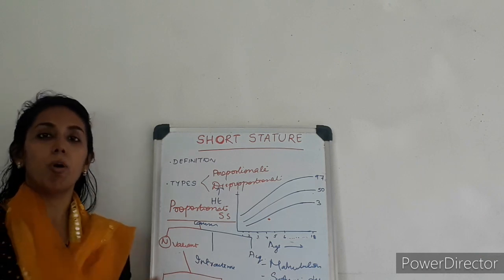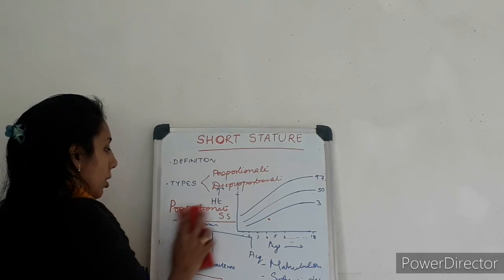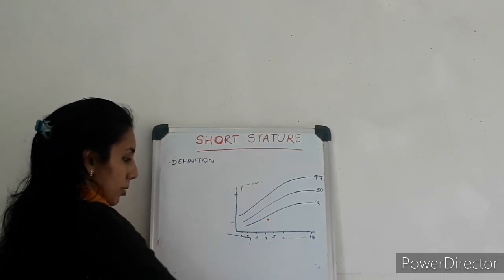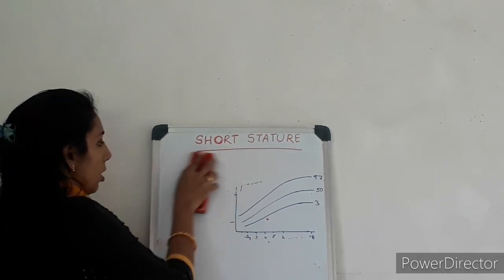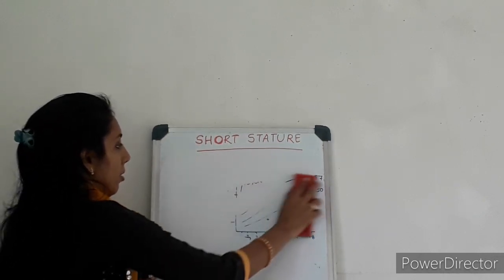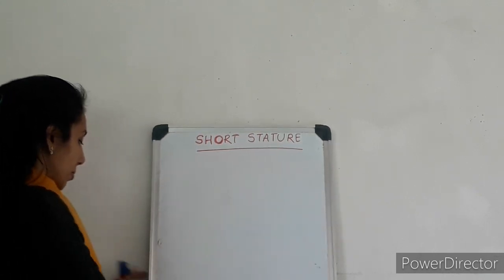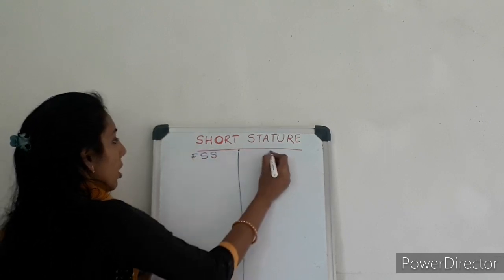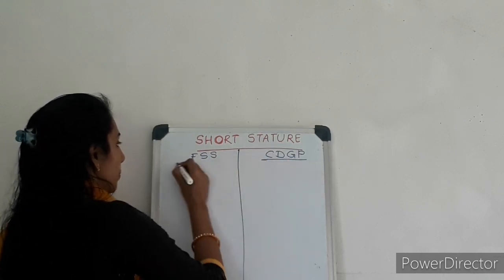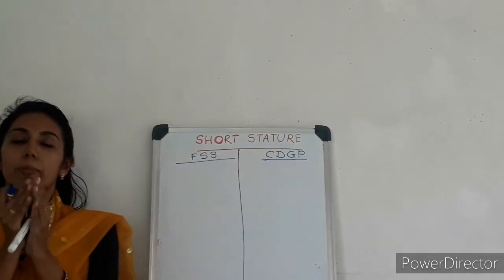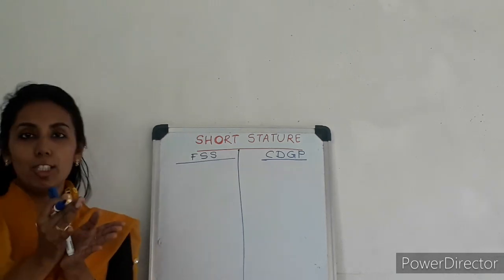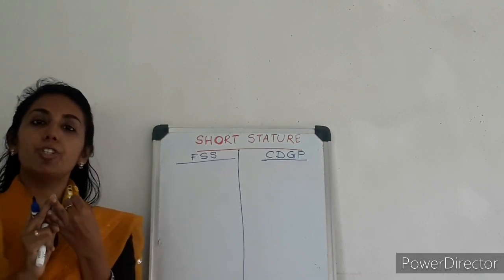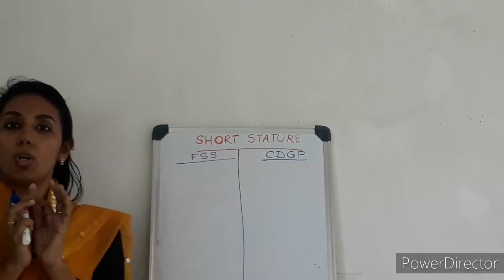Now we will go in detail about FSS and CDGP. We have two categories — familial short stature and constitutional delay of growth and puberty. In familial short stature, I always tell my students: just remember, the parents are short, the child is also short, and adult height is also short. Parents are short, in childhood the child is short, and as an adult the child is also in short stature.